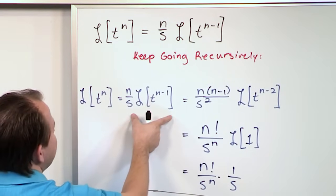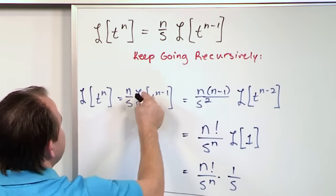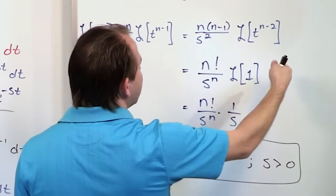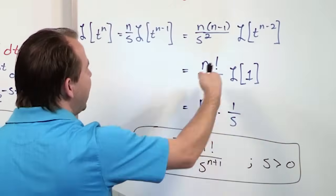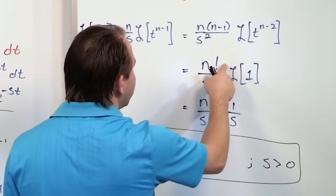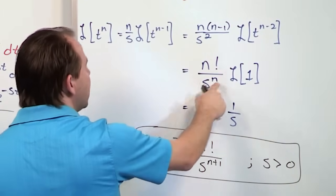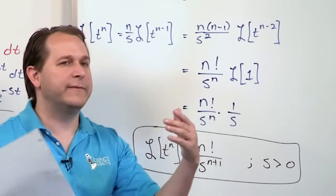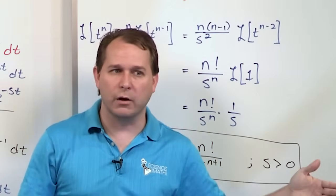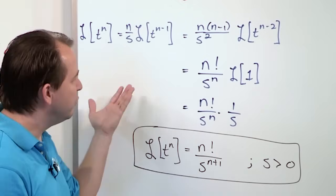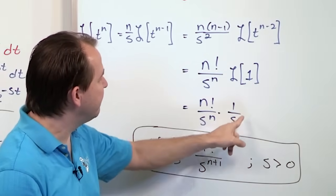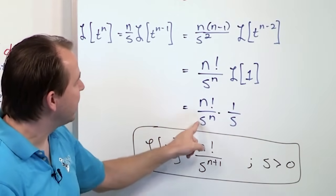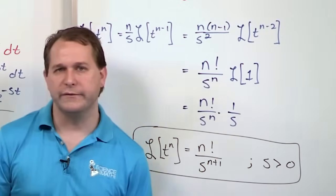We tidy this up, and inside we realize n over s are constants that come out, giving a positive sign. e to the minus st times t to the n minus 1 stay on the inside, and we recognize that integral is just the Laplace Transform of t to the n minus 1. When we apply the limits of integration, plugging in infinity and 0, everything drops away to 0 over here. All we're left with is n over s times the Laplace Transform of t to the n minus 1. Going recursively — pulling n minus 1 out, another s on bottom, then n minus 2, and so on — eventually we reach t to the 0, giving n factorial over s to the n, times the Laplace of 1, which is 1 over s. The answer is n factorial over s to the n plus 1.